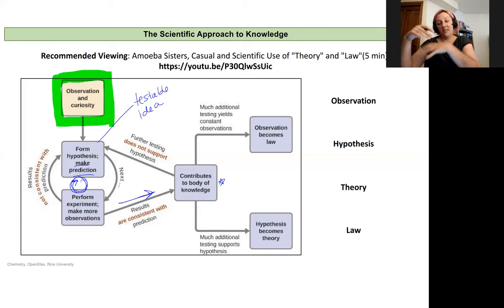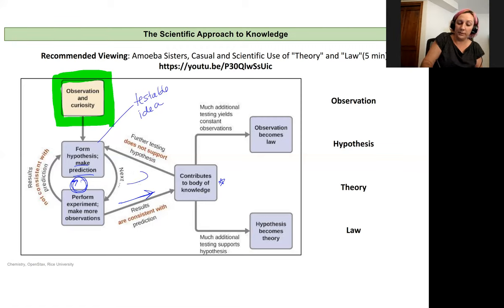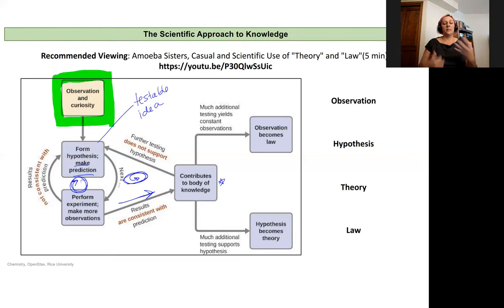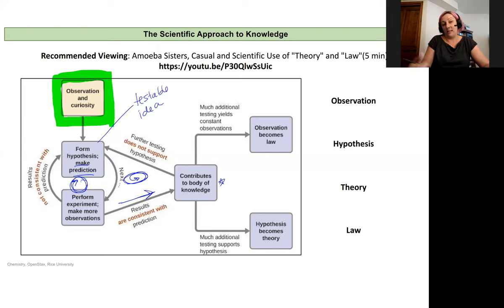Sometimes further testing doesn't really support the hypothesis, and we go back and constantly refine in a loop. There are lots of loops in the scientific approach to knowledge. As we build up more knowledge and see observations again and again that are consistent with our hypothesis, we start to develop laws and theories.